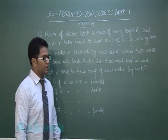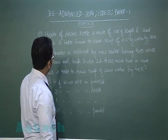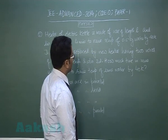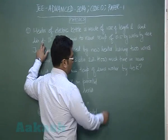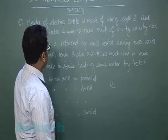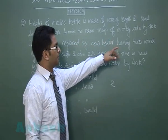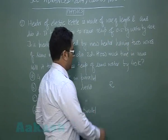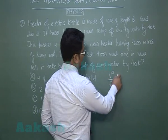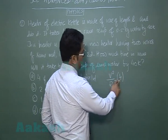Question number two is from current electricity. It says heater of electric kettle is made of wire of length L and diameter D. Correspondingly, let the resistance be R. It takes four minutes to raise the temperature of this much water by 40 Kelvin. That means connected to a voltage supply, V squared by R time is in four minutes, and that's the total heat equal to m c delta theta.